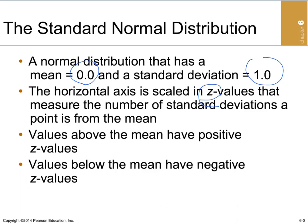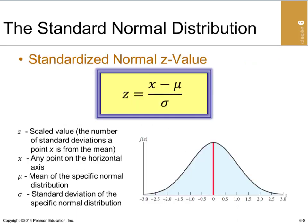The standard normal variable Z is defined as Z = (X − μ) / σ. Instead of using X as our random variable, we use Z, which represents the distance of any X from the mean expressed in standard deviations. The distance between X and the mean is X minus mu; dividing by sigma expresses that distance in units of standard deviations. It's like converting inches to feet by dividing by 12 — here we divide by one standard deviation.